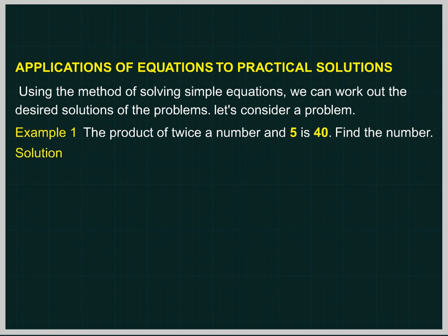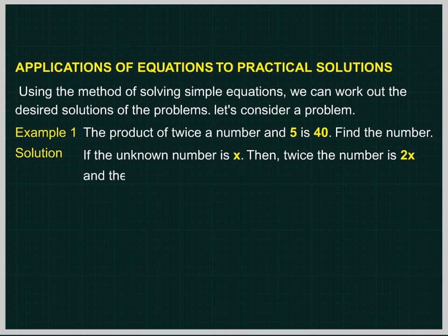Solution. If the unknown number is x, then twice the number is 2x. And the product of 2x and 5 is 40.